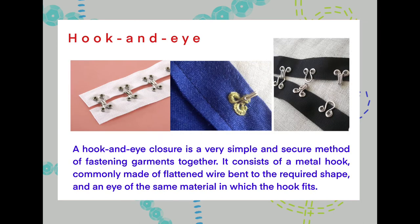This is another fastening called a hook and eye. A hook and eye closure is a very simple and secure method of fastening garments together. It consists of a metal hook, commonly made of flattened wire bent to the required shape, and an eye of the same material in which the hook fits. Sometimes people embroider over these to take away that metal look. These are commonly found on cardigans and on trousers as well.